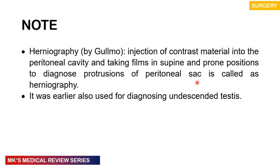There is a process known as herniography, where you inject contrast material into the peritoneal cavity and take films in the supine and prone positions to diagnose protrusion of the peritoneal sac. It was used earlier on to diagnose undescended testis — that's your cryptorchidism.